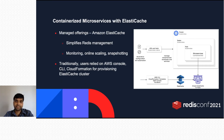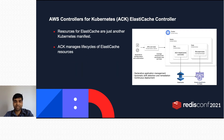As an alternative to running Redis yourself, you can use a managed offering like Amazon ElastiCache. ElastiCache helps you with monitoring, snapshotting, online scaling, and provides many other advantages. Traditionally, Kubernetes users had to rely on the AWS Console, CLI, or CloudFormation for provisioning ElastiCache clusters. We thought there could be a better way for Kubernetes users. Introducing AWS Controllers for Kubernetes ElastiCache controllers. Resources for ElastiCache are just another Kubernetes manifest — a specification of a Kubernetes API object in JSON or YAML format that specifies the desired state Kubernetes will maintain when you apply the manifest.